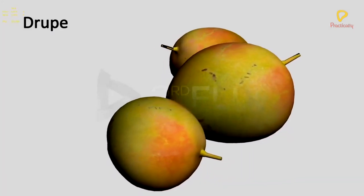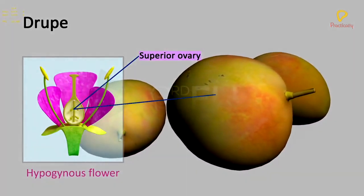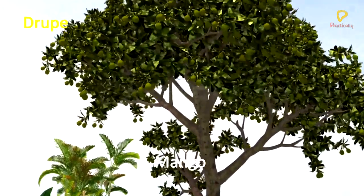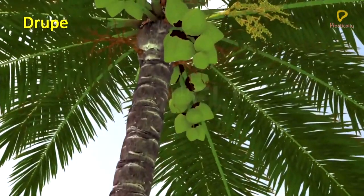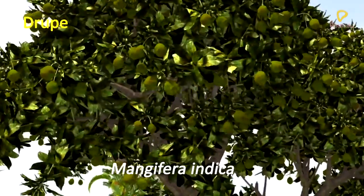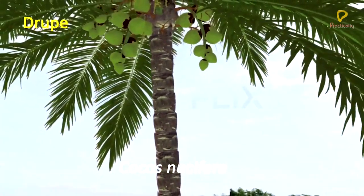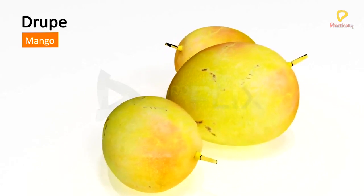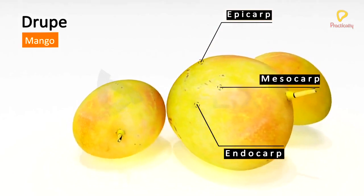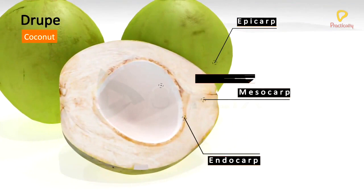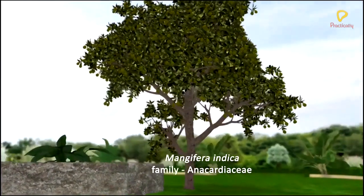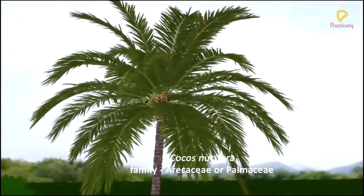Drupe. A drupe fruit develops from the monocarpellary, unilocular, superior ovary, usually with one seed. Drupe is seen in mango and coconut. Mangifera indica is the botanical name of the mango plant. Cocos nucifera is the botanical name of the coconut plant. In mango, the pericarp is well differentiated into a thin epicarp, fleshy mesocarp, and stony endocarp. In coconut, the epicarp is thin, mesocarp is fibrous, and endocarp is stony. In coconut, the endosperm is the chief edible part. Mangifera is a member of the family Anacardiaceae. Cocos nucifera is a member of the family Arecaceae.